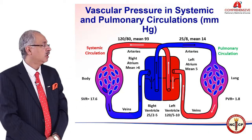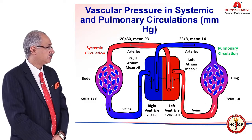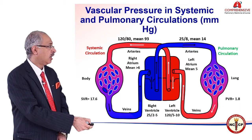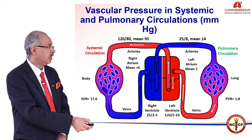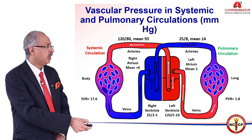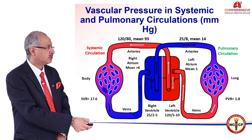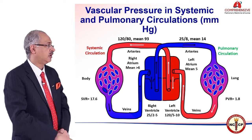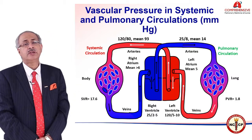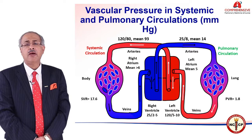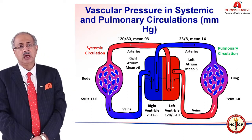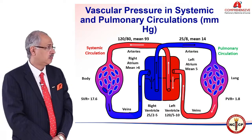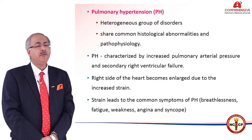If you see this particular cartoon here, it's a low-pressure system. The blue one represents the venous circulation. The right side of the heart sends the blood to the lungs where it gets oxygenated, then comes to the left heart. The pressures vis-à-vis systemic circulation are much lower — the average mean pressure here is 14 mmHg, with a systolic pressure of 25 and diastolic pressure of 8.